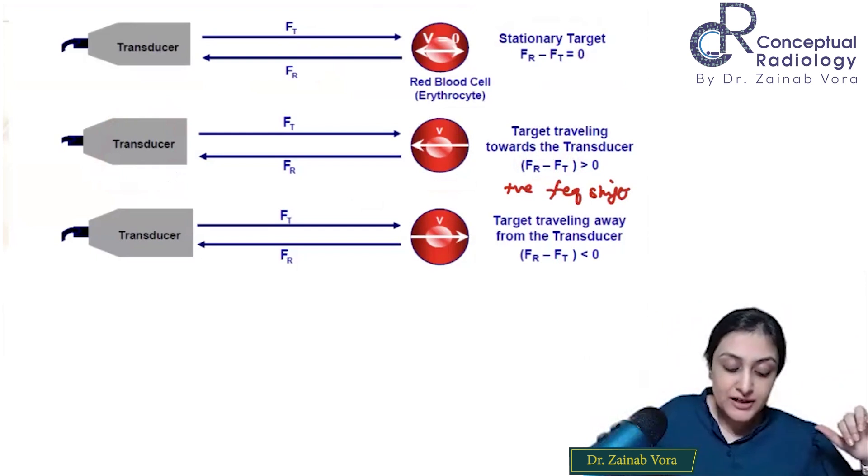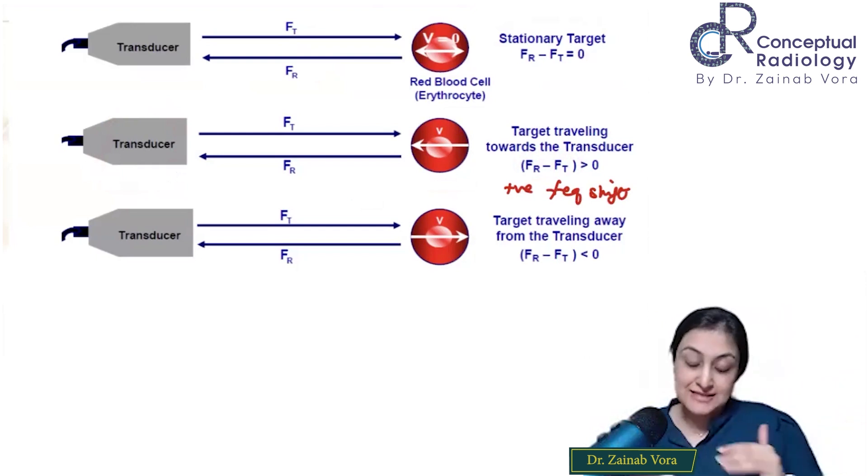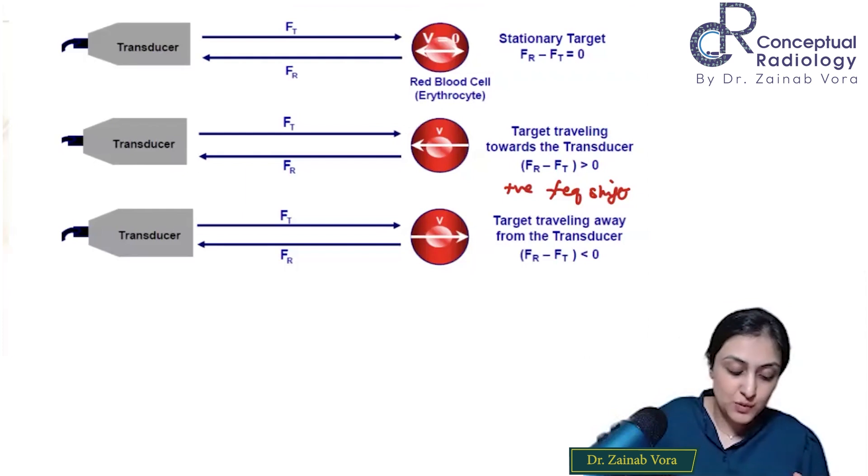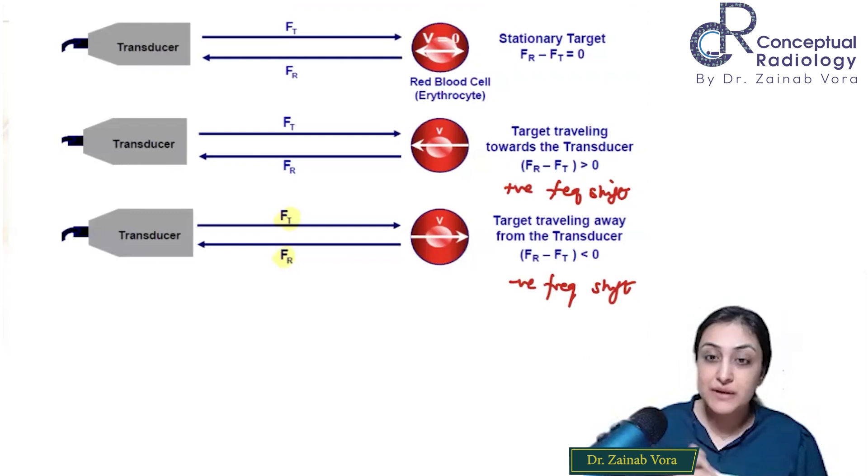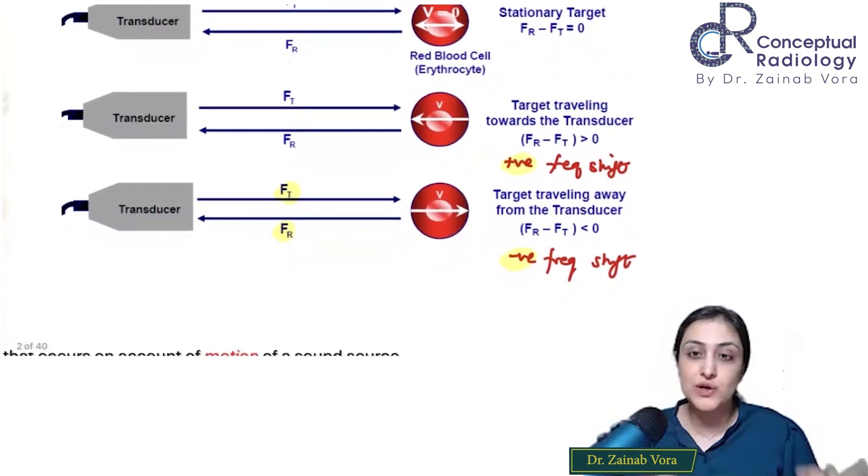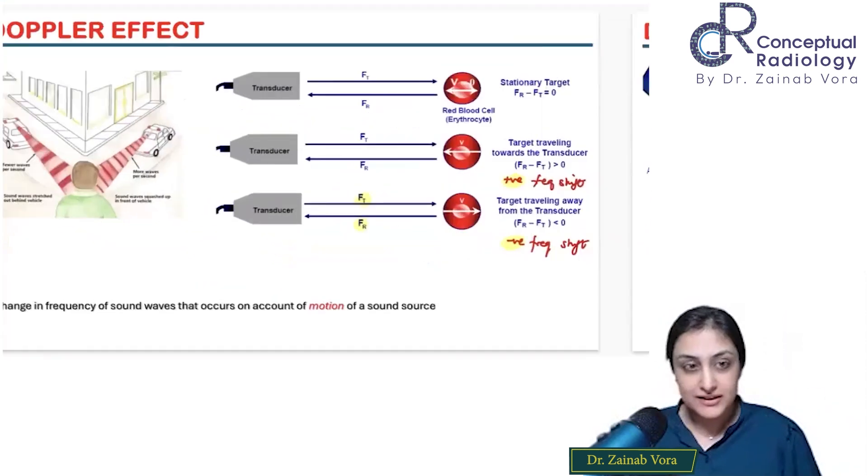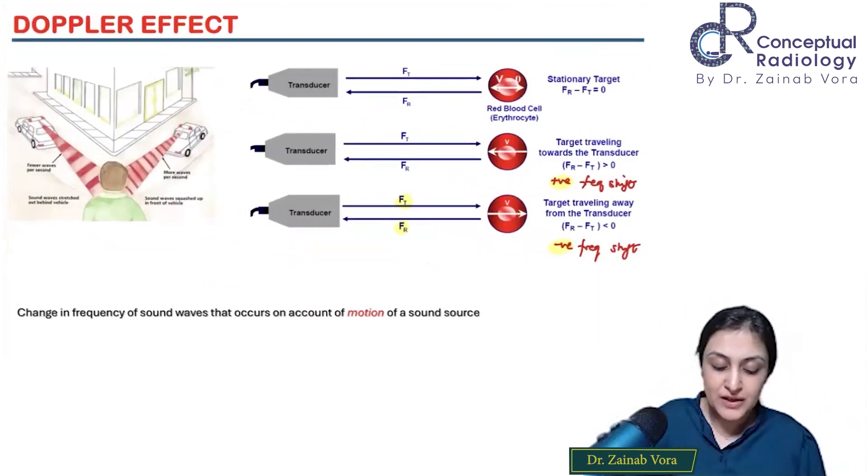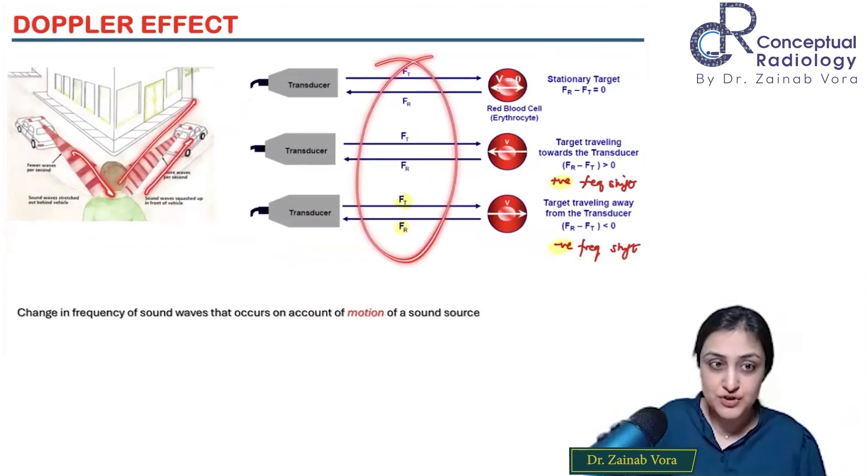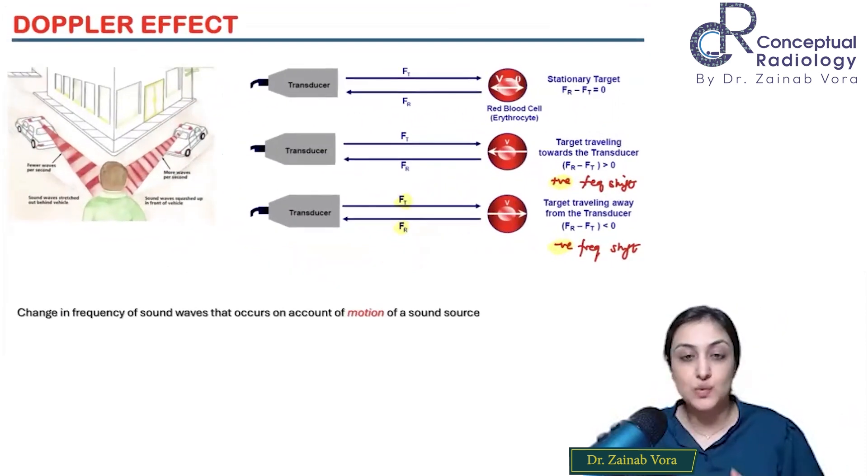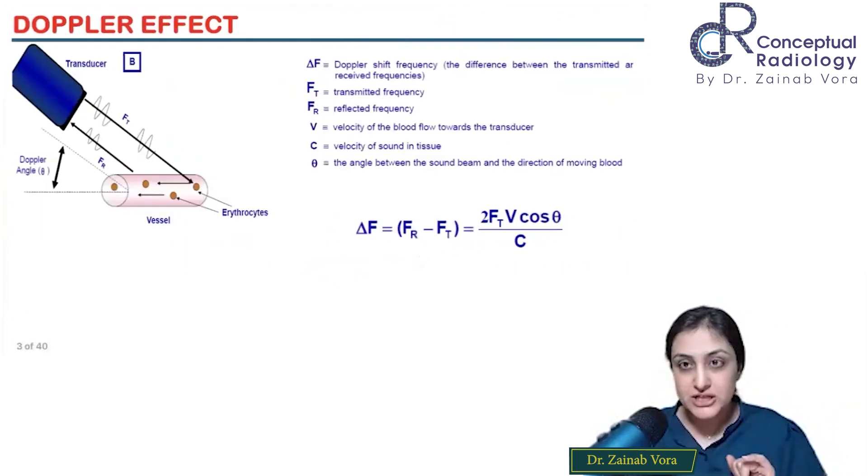If the transmitted frequency is lesser than the received frequency, this is the negative frequency shift. We see what is the transducer frequency and what's the frequency I'm receiving back - whether it's positive or negative frequency shift. This determines the direction. Positive shift means toward, negative shift means away.